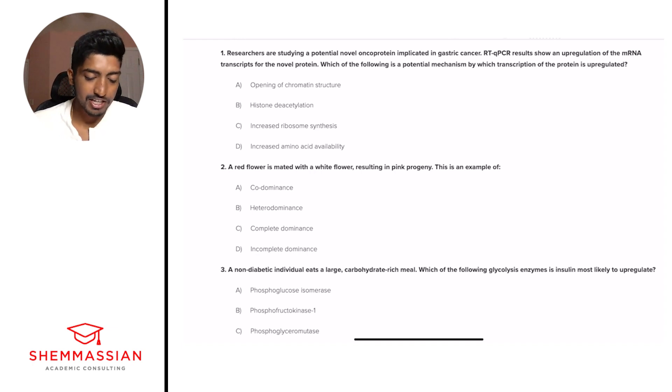Researchers are studying a potential novel oncoprotein implicated in gastric cancer. RT-qPCR results show an upregulation of the mRNA transcripts of the novel protein. Which of the following is a potential mechanism by which transcription of the protein is upregulated? Is it A, opening up chromatin structure, B, histone deacetylation, C, increased ribosome synthesis, or D, increased amino acid availability?